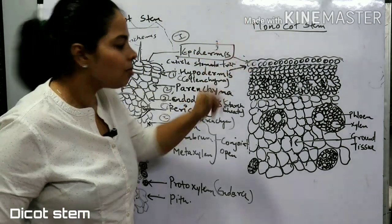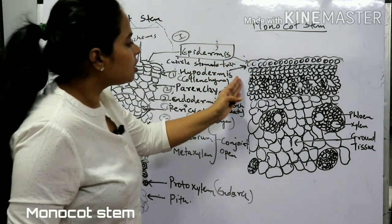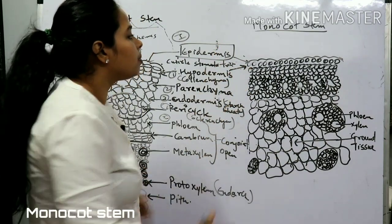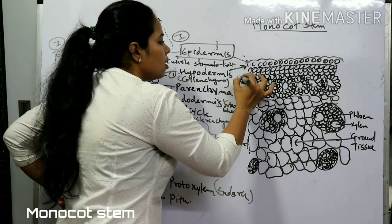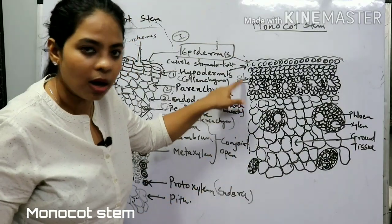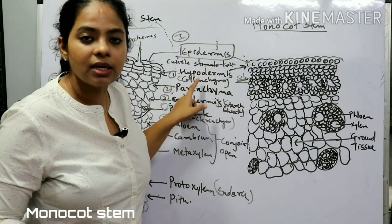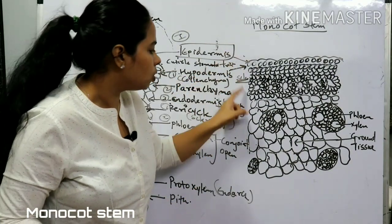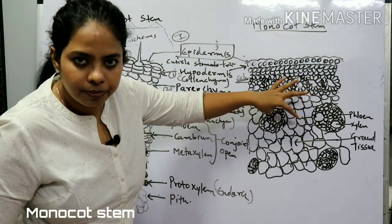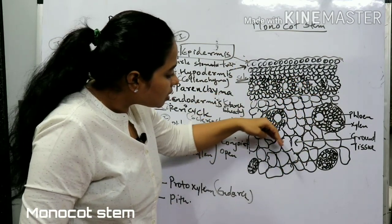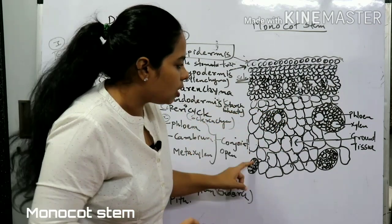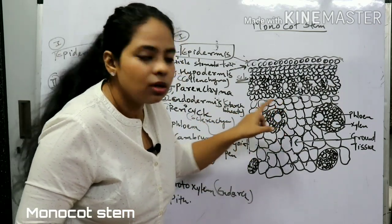Now moving on to monocot stem: the epidermis is present in the same way, but the hypodermis is now made up of sclerenchyma — unlike dicots where it was collenchyma. The vascular bundles are scattered, and those lying toward the periphery of the stem are smaller compared to those on the inner side.